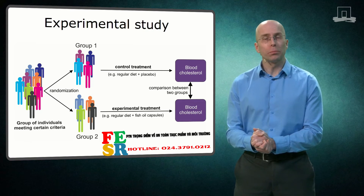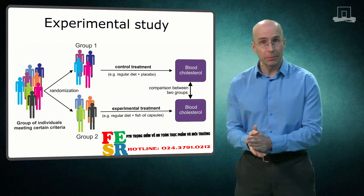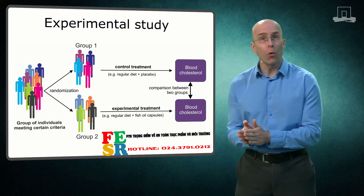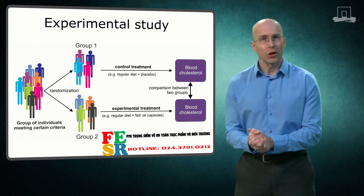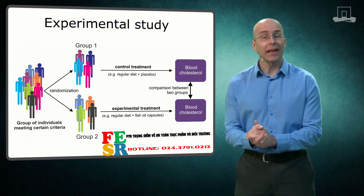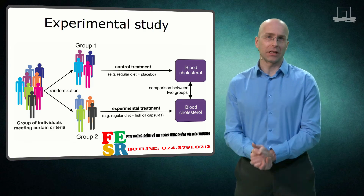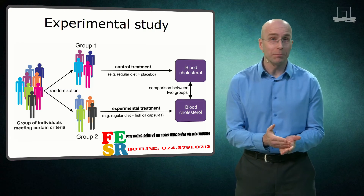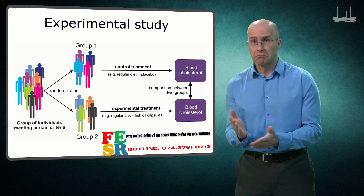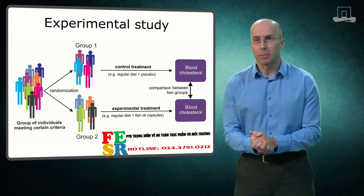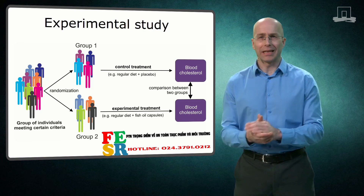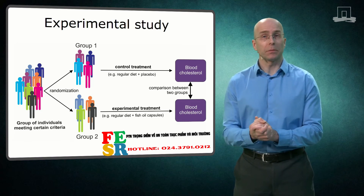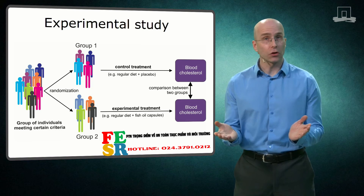Ideally, interventions should be double-blind, meaning that neither the participants nor the investigator who is performing the study know what treatment each subject is getting. The code is kept somewhere hidden and can only be broken after the study is finished. Of course, when comparing a Mediterranean diet with a Western-type diet, it should be pretty obvious what everybody is getting — you cannot blind this type of study. However, you can blind studies where you compare different types of fat or high versus low fiber diets.